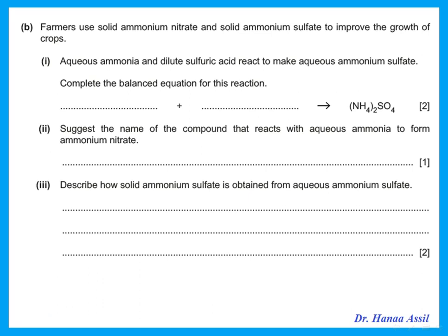Farmers use solid ammonium nitrate and solid ammonium sulfate to improve the growth of crops. Aqueous ammonia and dilute sulfuric acid react to make ammonium sulfate — write the balanced equation. To form ammonium sulfate, react ammonia with sulfuric acid; to balance, put a 2 in front of the ammonia. To make ammonium nitrate, you react ammonia with nitric acid.